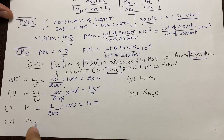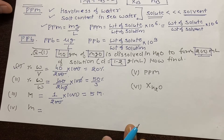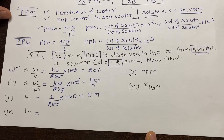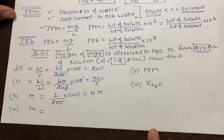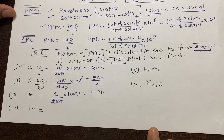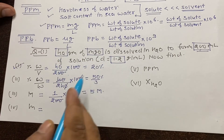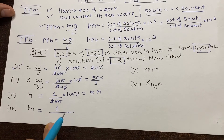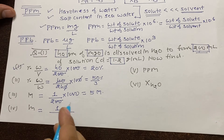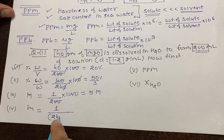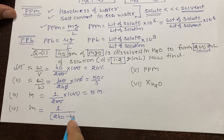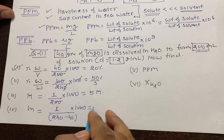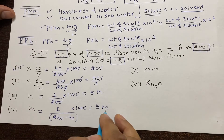For molality: it is moles of solute per kilogram of solvent. Moles of solute = 40/40 = 1. Mass of solution is 240 grams and mass of solute is 40 grams, so mass of solvent = 240 − 40 = 200 grams = 0.2 kg. Molality = 1/0.2 = 5 m. So molarity and molality are equal in this particular case.